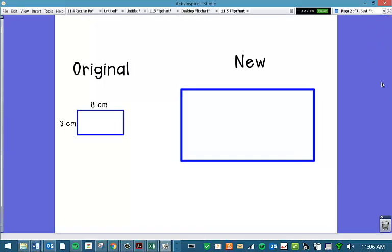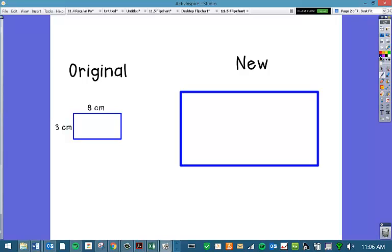Our original rectangle has a length of 8 centimeters and a width of 3 centimeters. Let's say I'm going to triple my dimensions. So my new length would be 8 times 3, which is 24, and my new width would be 3 times 3, which is 9. I'm tripling my dimensions. That means I'm multiplying my dimensions by 3. That number that I'm multiplying my length and my width by is called my scale factor. So my scale factor in this instance is 3.